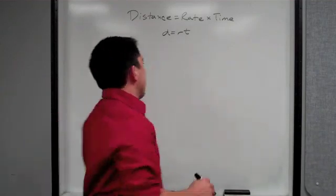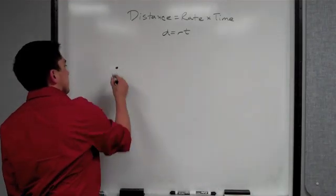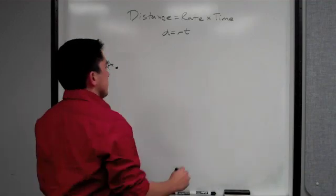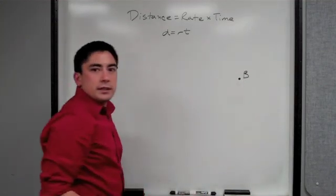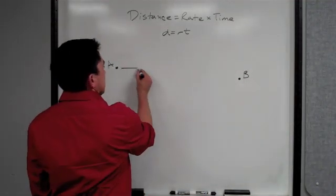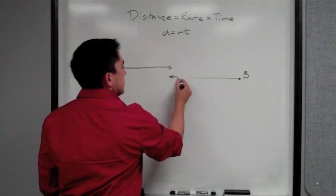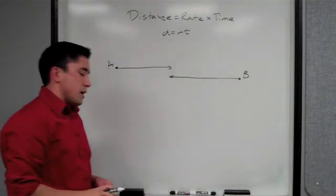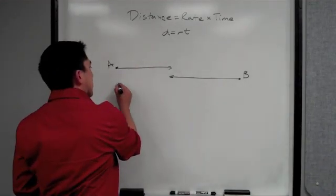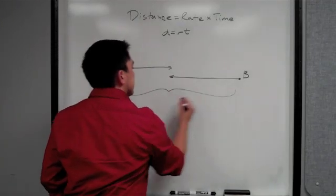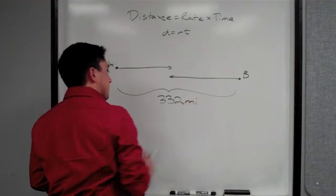The first example says we have train A at a station and train B at another station. They're going to run on parallel tracks toward each other. The stations are 332 miles apart. So this distance here is 332 miles apart.